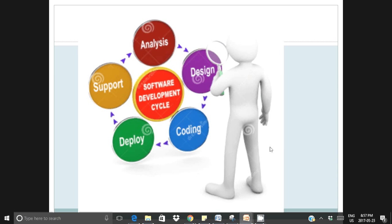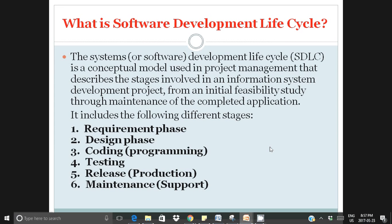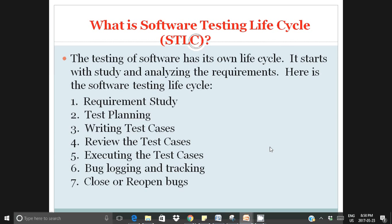To summarize: Software Development Lifecycle has six phases — requirements, design, coding, testing, release, and maintenance. Software Testing Lifecycle starts with requirements review or requirements study, then test planning, then test case writing and review, then test execution — a very important phase — and then the defects phase: logging, tracking, closing defects and signing off.